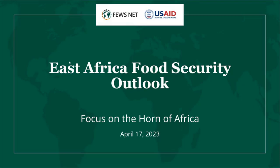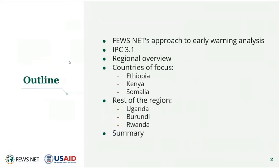Welcome again everyone. Thank you for joining us for FEWS NET's briefing. Today we are focused on the Horn of Africa. My name is Vanessa Roy, I'm the deputy chief of party for analysis for the FEWS NET early warning team. Today we'll start with a brief overview of our approach to early warning analysis and the IPC scale, then dive into the current situation and projections for acute food insecurity through September of this year. We'll do a regional overview, spending the majority of time on Ethiopia, Kenya, and Somalia, and briefly touch on Uganda, Burundi, and Rwanda. South Sudan and Sudan will be covered in a briefing next week.